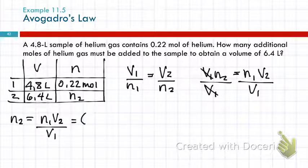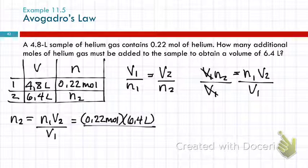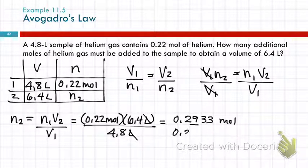N1 was 0.22 moles. V2 is 6.4 liters, and v1 is 4.8 liters. Always write the units in there, and then see if they cross out correctly. You'll see the liters cancel liters. Find the calculator, 0.22 times 6.4 divided by 4.8. All the numbers we're given have two sig figs, so our answer will have two significant figures as well, 0.29. And then I'm going to write down two extra digits, just as insurance. And then that would round to 0.29 moles.